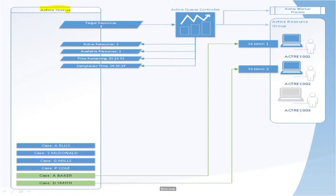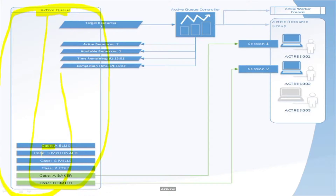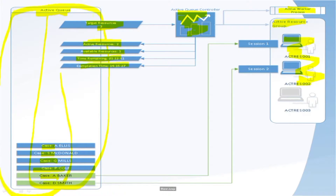Let me show you this diagram. This is our active queue and it contains six items or six cases. There are two target resources and both are active, and one is available. This shows time remaining and completion time. This is the active queue controller which will control the resources. This is the process, and this is the active resource group — a resource group is a combination of one or more resources. So this active queue will use two resources because both are active.